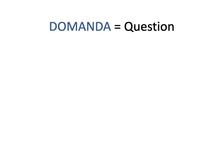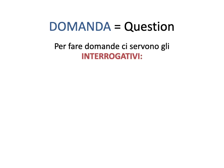Gli interrogativi — that means interrogatives, or if you will, question words. We're going to learn how to ask questions in Italian. Domanda — you've heard me pronounce this word in class a lot. Domanda is a question. Per fare domande ci servono gli interrogativi — in order to ask questions, we use interrogatives. Many of these you have heard a lot in class because I'm constantly asking questions.